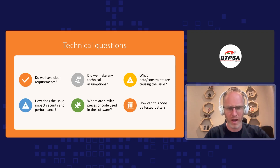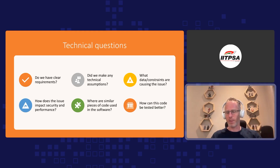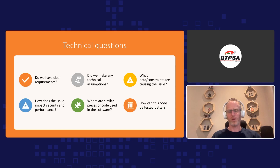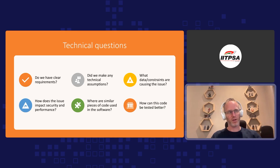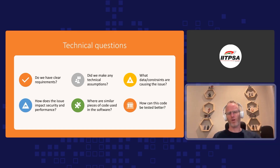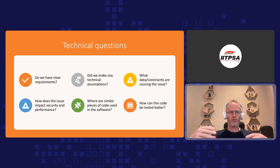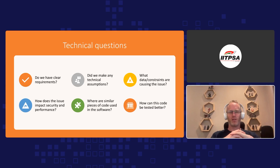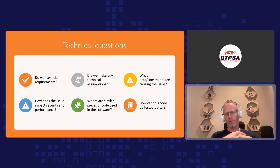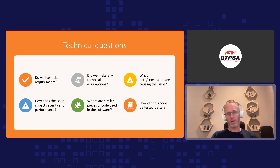Lastly from a technical question perspective, it's important to ask: how can this code be tested better? We've got to look at ourselves as testers and go, particularly when there are production issues — what did we miss from a testing perspective? What are the things we need to do to catch this better? There are always going to be outliers that are really difficult to find and not worth the effort to identify. But a lot of times there are simple things we can do to make our testing better. Own that and make sure we are being part of that solution.